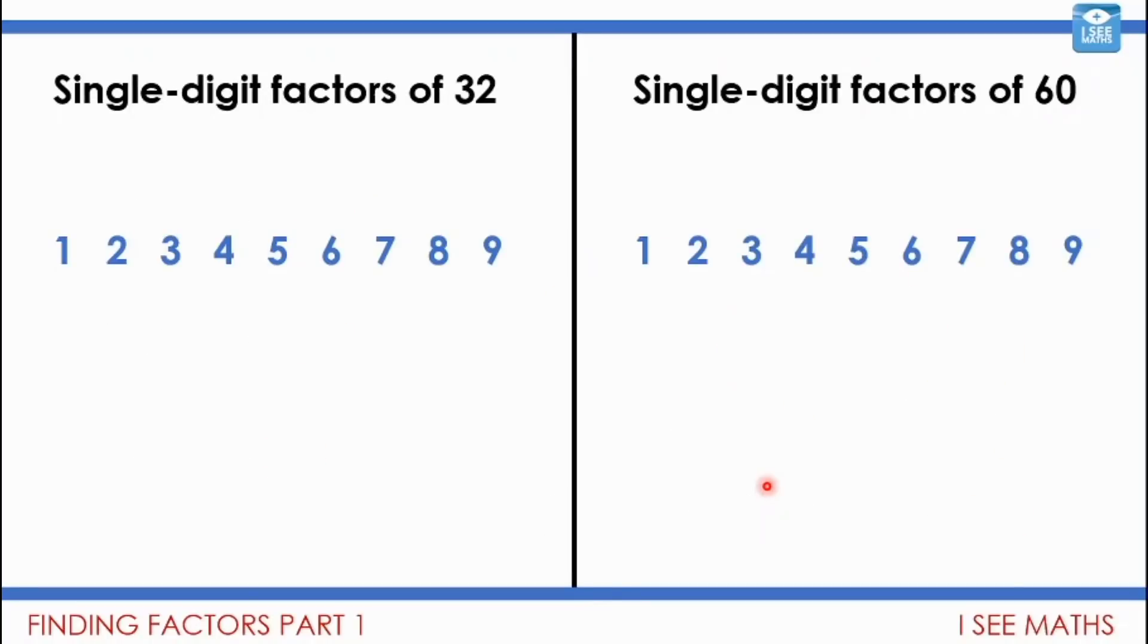So what we're going to have a look at is see if we can work out the single digit factors of 32. So looking at these single digit numbers and thinking, which ones of those are factors of 32? Or the single digit factors of 60, which ones of these single digits are factors of 60? Now, I want you to work out as many as you can. You might have a go at the example on the left or the example of the right and have a think. How do you know which of those digits are factors of either 32 or 60? Maybe some you'll just know immediately that they are factors or they aren't factors and some you'll need to do some calculation. Pause the video and have a go.